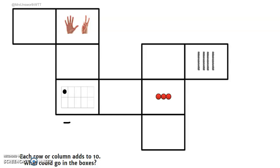Hi, grade ones. We're looking at the first problem in the worksheet that I posted today. So let's go over the instructions together. Each row or column adds to 10. What could go in the boxes?